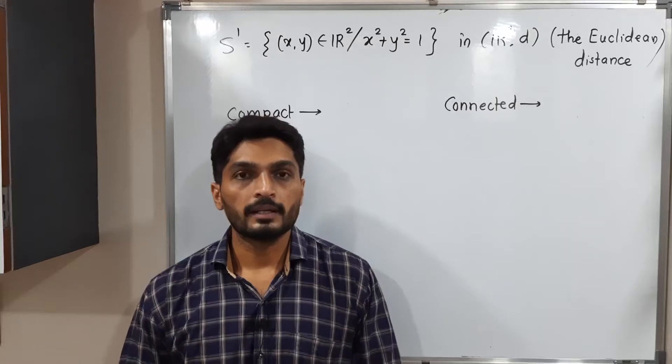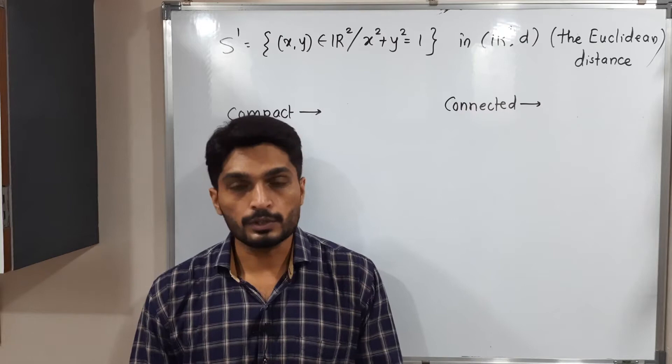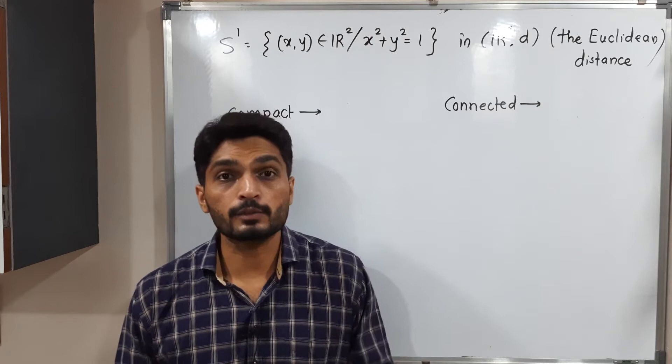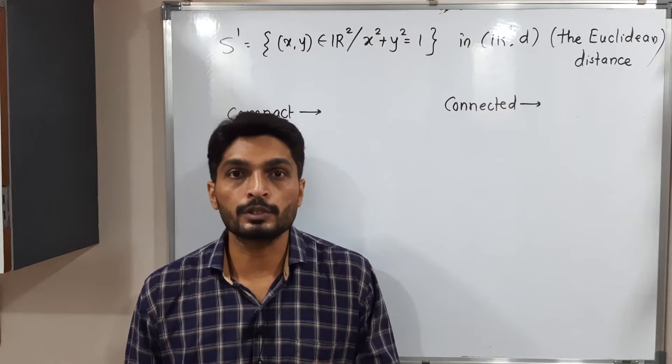Let us discuss this example. In this example we have given a set S1 which is a subset of R2. So it is a collection of points which satisfy this condition x square plus y square is equal to 1.